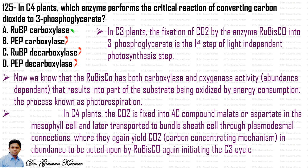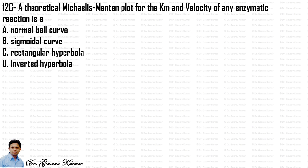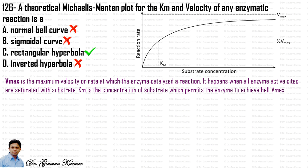This carbon-concentrating mechanism means Rubisco acts as a carboxylase, converting CO2 to 3-phosphoglycerate in the C3 cycle, so the answer is RuBP carboxylase. Next question: a theoretical Michaelis-Menten plot for KM and velocity of an enzymatic reaction is a rectangular hyperbola. Vmax is the maximum velocity when all enzyme active sites are saturated with substrate, and KM is the substrate concentration at which the enzyme achieves half Vmax.